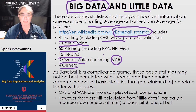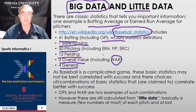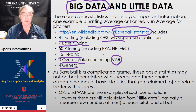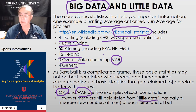Baseball is pretty complicated, and deciding which of these measures is right is not so obvious — many people claim different things. One tends to assume that the answer is some combination of multiple basic statistics, and you find the best combination that correlates with success by just fitting the data. So OPS and WAR are a little like that. These are calculated from little data — they are the classic approach to sabermetrics, and highly successful.